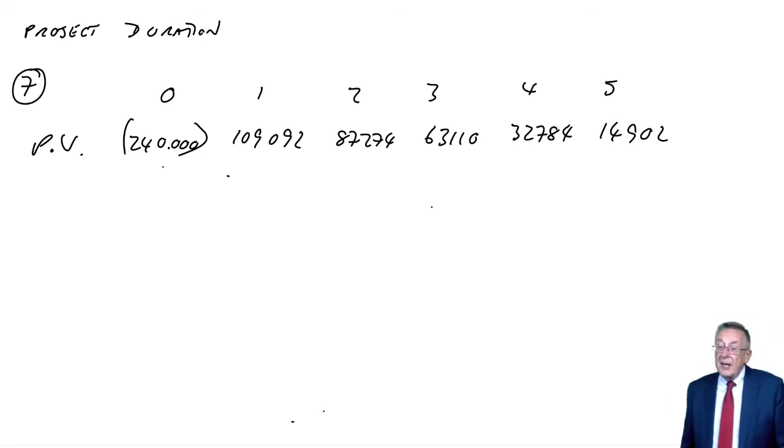Now, the only problem with that is it ignores any later flows. If we say we've had our money back after three years, end of story. But what happens if one gives 14,000 in five, another's going to give 140,000 in five? Effectively, we're ignoring it. And so, as perhaps a better measure, let's work out the average time it takes to get the money back.